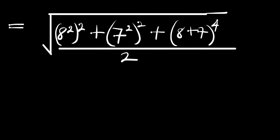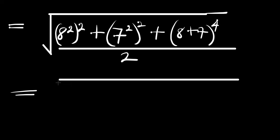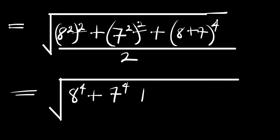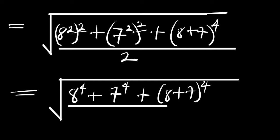So we proceed. The next thing is to multiply the exponents. We multiply the exponents, so we are going to have 8 power 4 plus 7 power 4 plus (8 plus 7) to the power 4, and everything here is divided by 2.